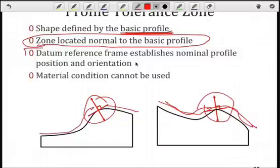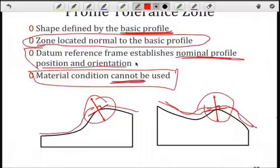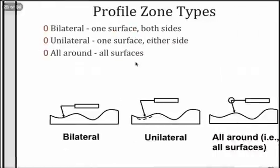We can also have a datum reference frame, which tells us exactly where to put this basic profile in terms of position and orientation. Note that material condition cannot be used. So, you should never see an M or an L in the feature control frame if we're using a profile tolerance.